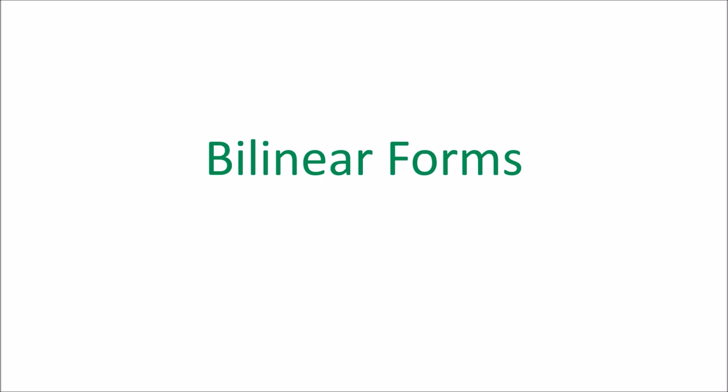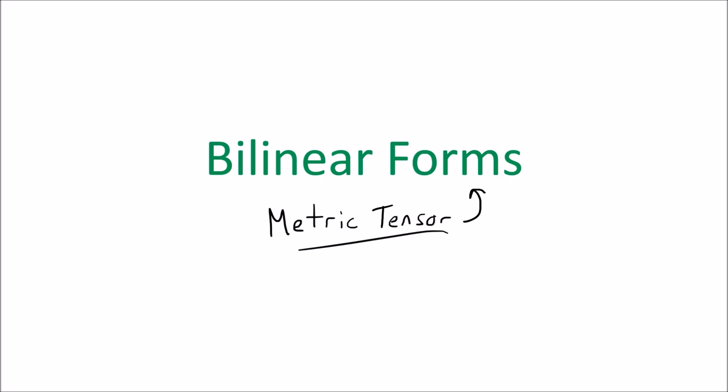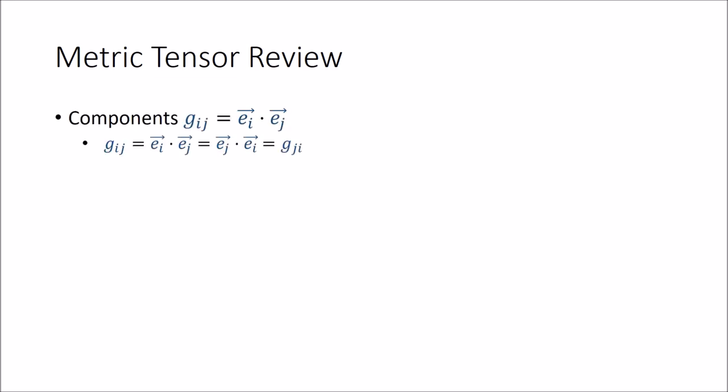This video won't be too long because you've already seen a bilinear form before. The metric tensor is actually a very specific example of a bilinear form, but I wanted to talk about bilinear forms in general before moving on to the tensor product. So we'll talk about bilinear forms quickly, and then we'll get started on the tensor product. To quickly review: the metric tensor is a tensor whose components in a given vector basis are given by the dot products of the basis vectors.